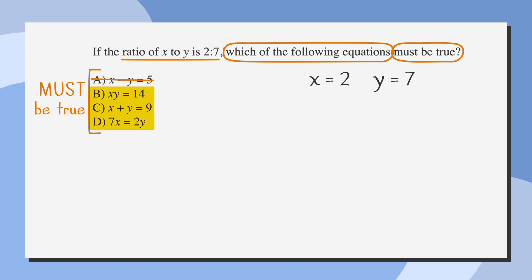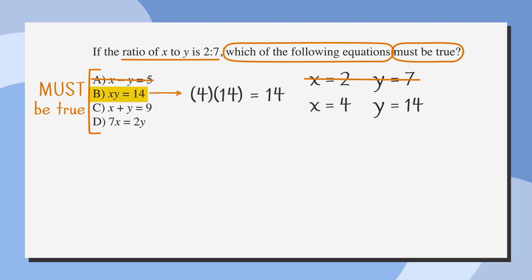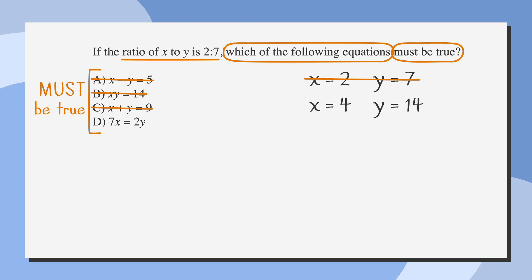We need to try again with a new set of numbers. Instead of 2 and 7, let's pick another set that fits the ratio — multiples of 2 and 7. Let's double them: x equals 4 and y equals 14. In answer choice B, 4 times 14 equals 14 is clearly wrong — cross off B. In answer choice C, 4 plus 14 equals 9 is completely wrong — cross off C. In answer choice D, 7 times 4 equals 2 times 14, and 28 equals 28, which is true. So D is the right answer.